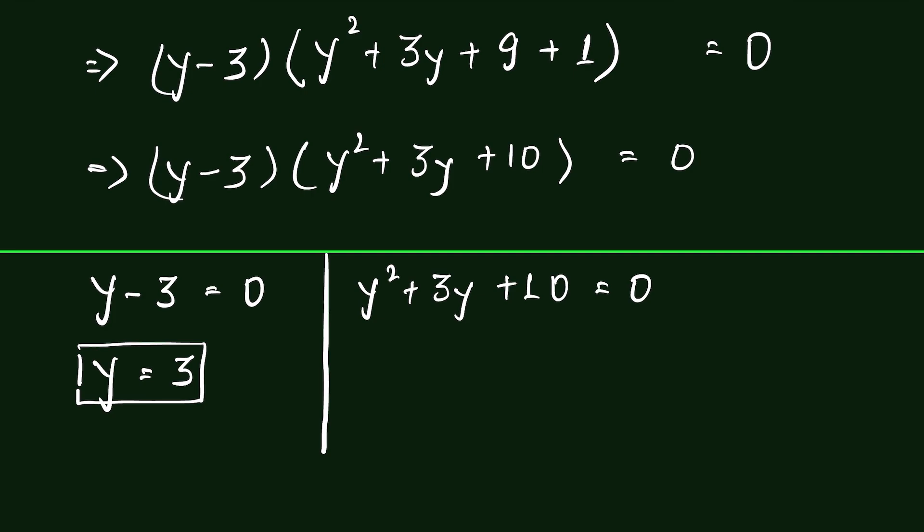Now for this quadratic equation to have a real solution for y, we can find through the discriminant method. If b square minus 4ac is greater than or equal to 0, then we have a real solution.